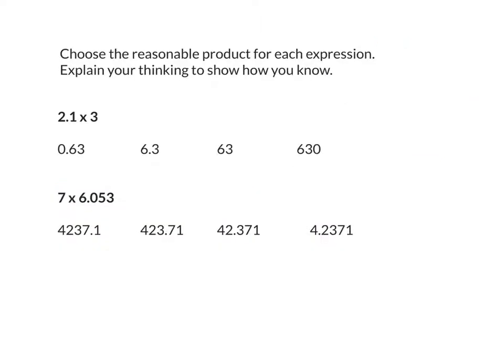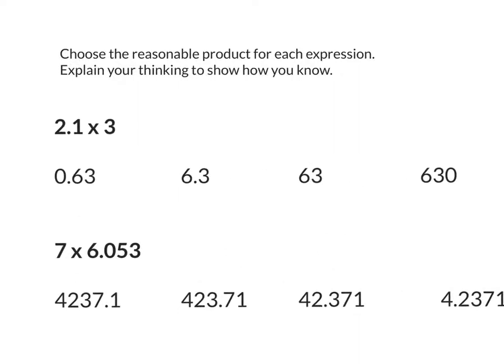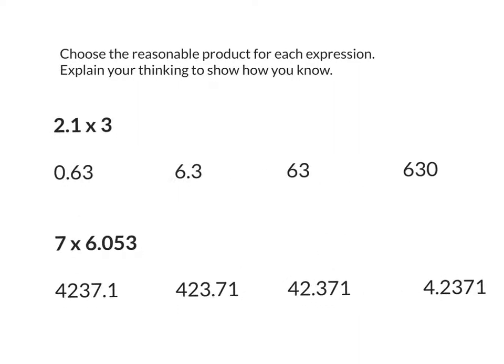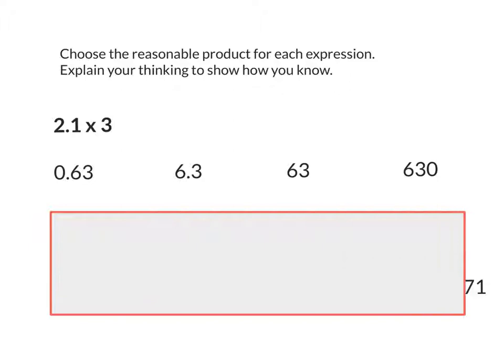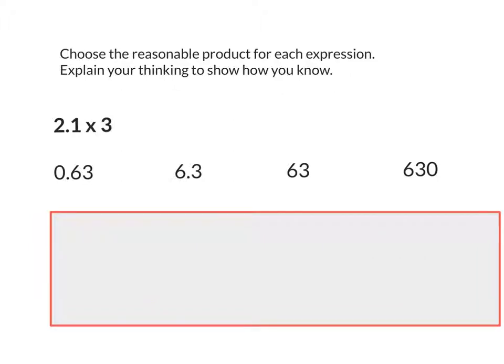Directions say to choose the most reasonable product for each expression and explain your thinking to show how you know. So what I would like you to do, please, first, is copy down 2.1 times 3. How can I rename 2.1 in unit form? 2.1 is the same as 21 tenths. How did you know that 2.1 is the same as 21 tenths? Because the one is in the tenths place. The one is in the tenths place. So do you guys agree that 2.1 times 3 is the same as 21 tenths times 3?